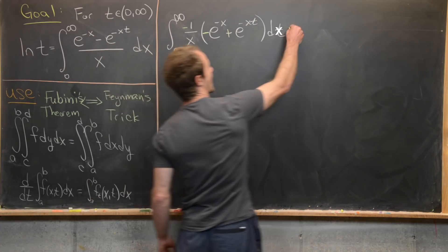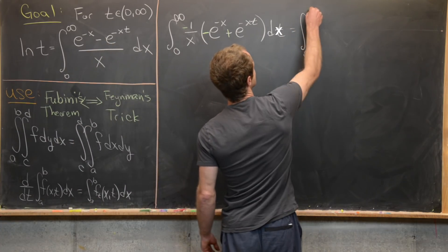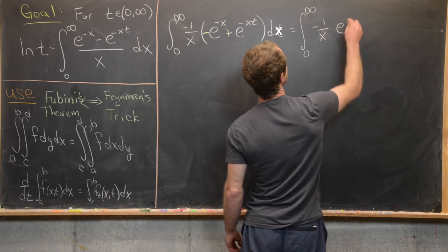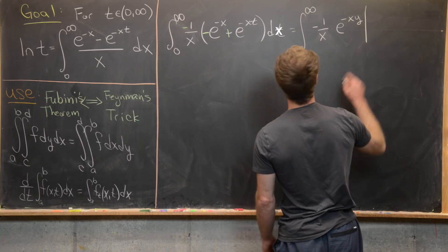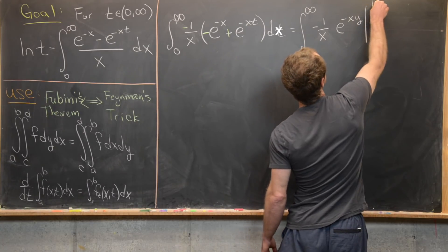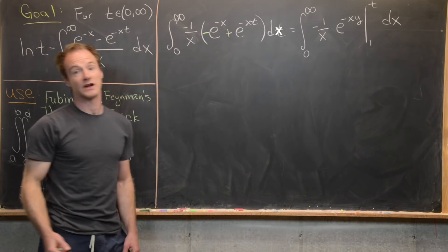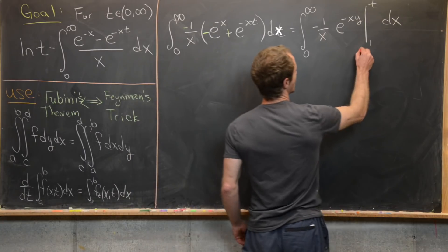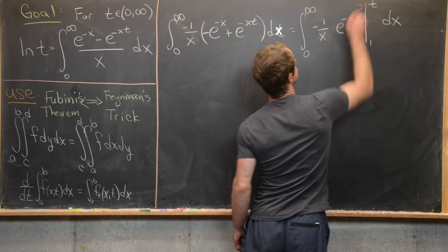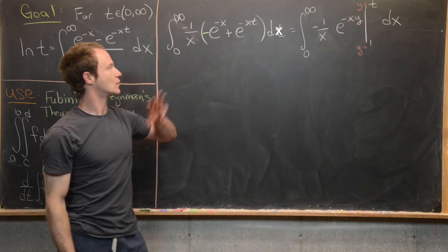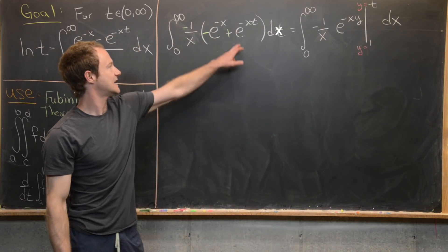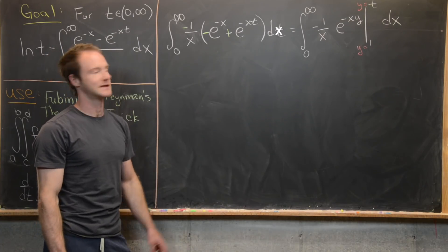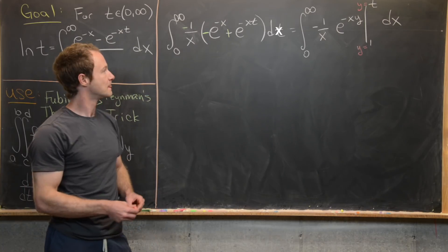In other words, I can rewrite this as the integral from zero to infinity of minus one over x times e^(-xy) evaluated from y equals one up to y equals t, dx. Notice: if I plug in y equals t, I get e^(-xt), which is exactly the first term. And if I plug in y equals one, I get e^(-x), which is the second term.